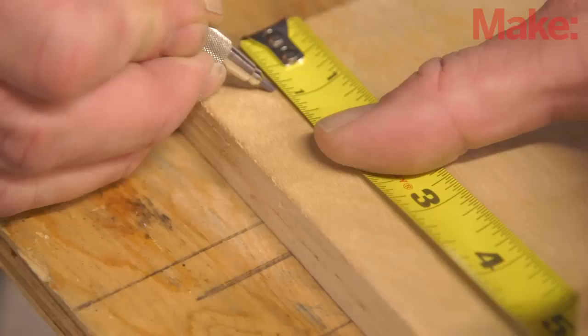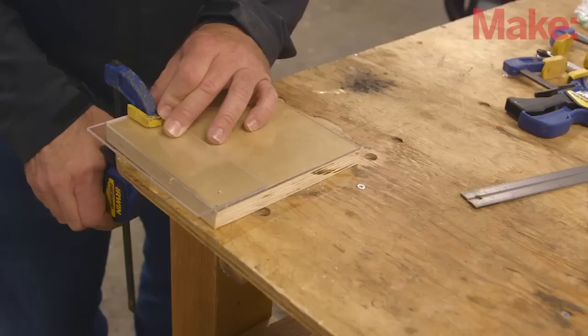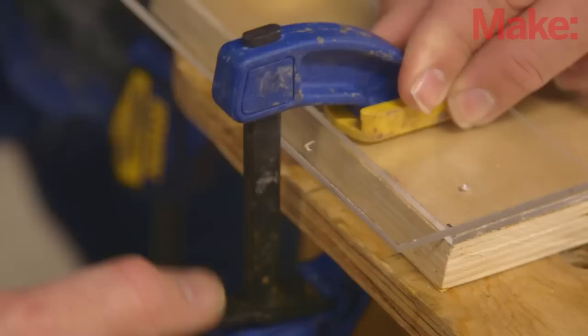Mark the top of the plywood base at the front two corners, three-quarter inch in from both the sides and the front edge. Make a third mark centered three-quarter inches in from the back edge.